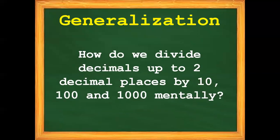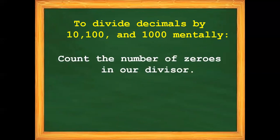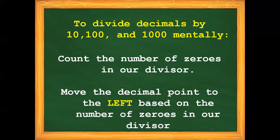Always remember: how do we divide decimals up to two decimal places by 10, 100, and 1,000 mentally? Step 1: count the number of zeros in our divisor. Step 2: move the decimal point to the left based on the number of zeros in our divisor.